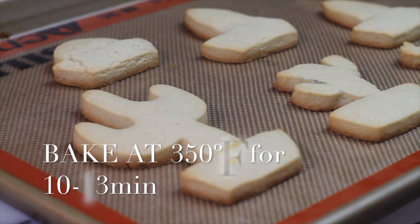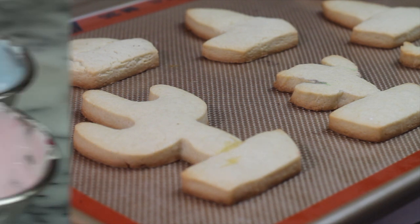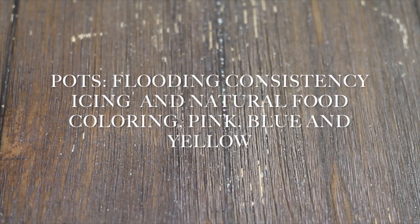Then you will need to bake your cookies at 350 and let them cool. Meanwhile, you can prepare your royal icing and tint it in different colors.